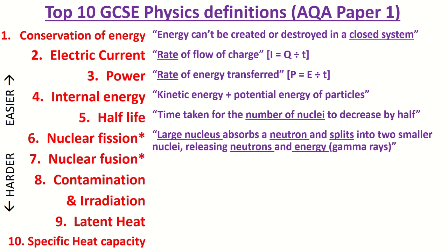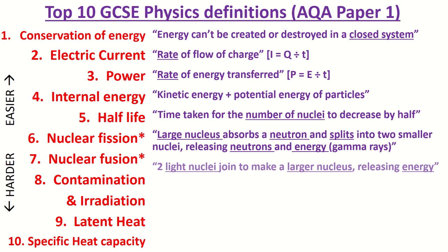Nuclear fission — this would be a two or three marker, so a slightly longer definition. Nuclear fission is what happens when a large nucleus like uranium absorbs a neutron and splits into two smaller nuclei, releasing both neutrons and energy. Sometimes the mark scheme requires you to say energy in the form of gamma rays.